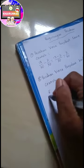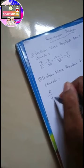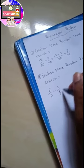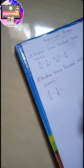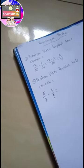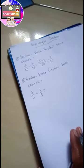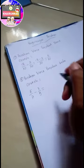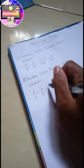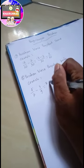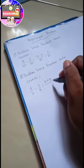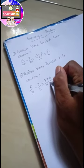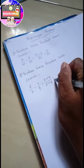5 per 7 dikurangi 3 per 9. Kalau ini kita kalihkan dulu, kalih silang dulu ya. Caranya mohon disimak. 5 dikali 9. Jadi, nanti atas bawah kita kalihkan. 7 dikali 9 sama dengan.